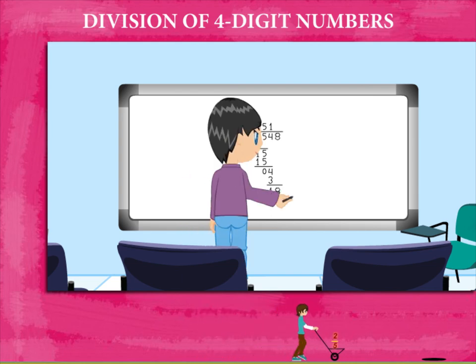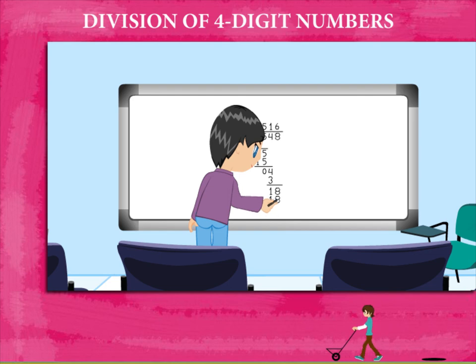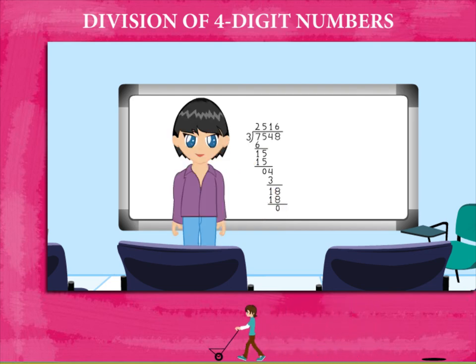He writes 6 at the top and 18 down below, subtracts and gets 0. His quotient is 2516.